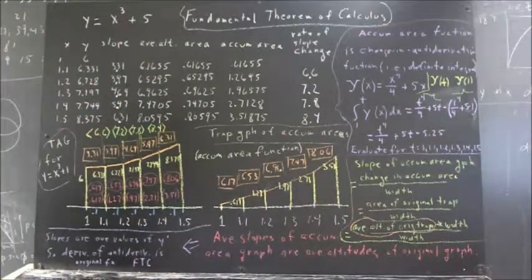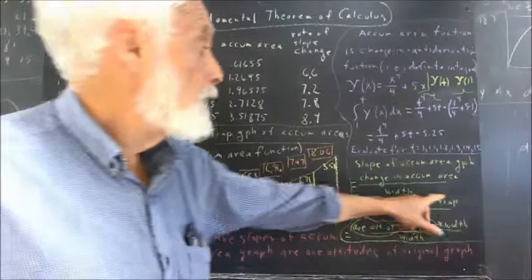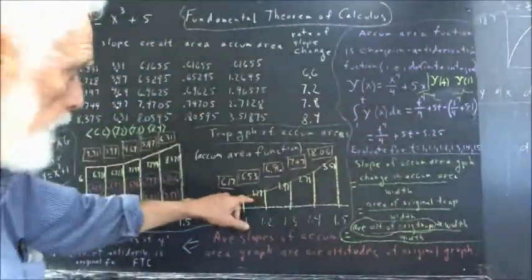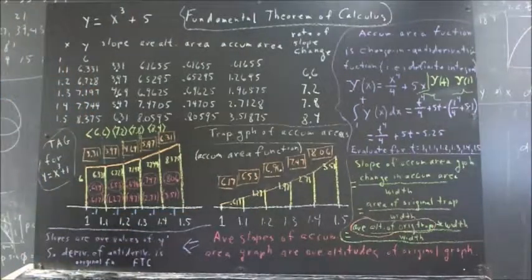Well, what's that? That's the area of the original trapezoid divided by the width, because the change in the accumulated area here is the area of the original trapezoid.